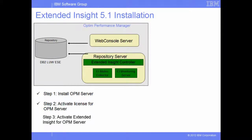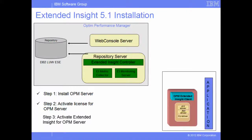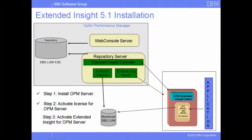To use Extended Insight, we must first activate the Extended Insight server components by applying a license to the Infosphere Optim Performance Manager server using the Extended Insight Activation Toolkit. The Extended Insight Client component is collocated with the database applications that access the monitored DB2 database. Depending on the application type, the Extended Insight Client hooks into JCC, .NET, or Call Level Interface Drivers, intercepts database traffic, and collects response times about transactions and SQL statements. This data is then periodically forwarded to the Extended Insight Monitoring Server, which stores it in the repository database.